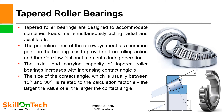A picture of a tapered roller bearing is shown — you can see the rollers are tapered. Tapered roller bearings are designed to accommodate combined loads — simultaneously acting radial and axial loads. The projection lines of the raceways meet at a common point on the bearing axis to provide true rolling action and low frictional moments. The axial load carrying capacity increases with increasing contact angle alpha. The contact angle is usually between 10° and 30°, related to the calculation factor E — the larger E, the larger the contact angle.